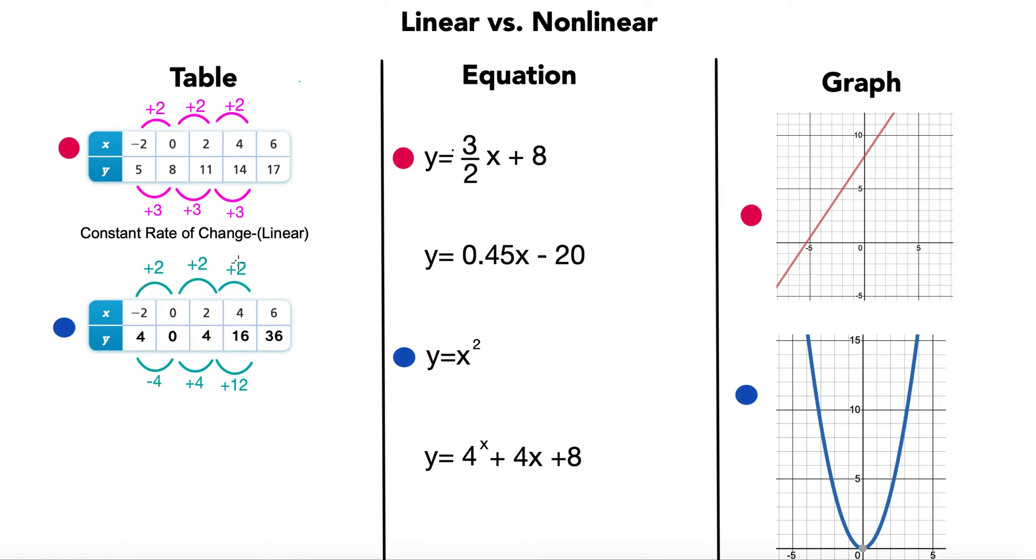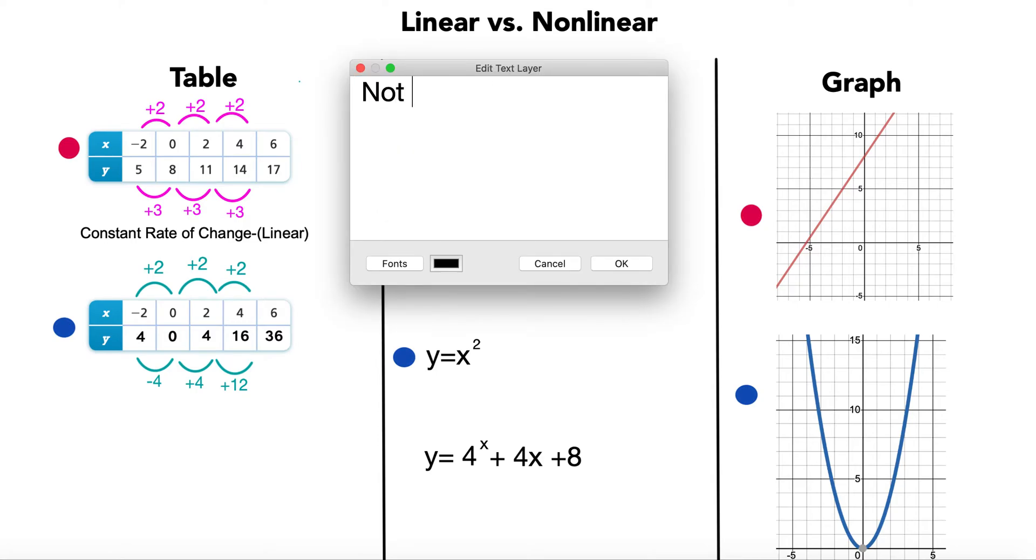So this is certainly not a constant rate of change. Yeah, the Xs are going up constant, but the Ys are not, so we don't have a constant relationship here. It's the inputs maybe, but the outputs are not. So we would say not constant rate of change. You guessed it. Non-linear.